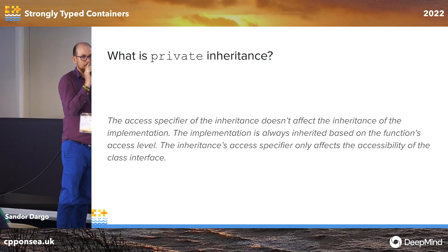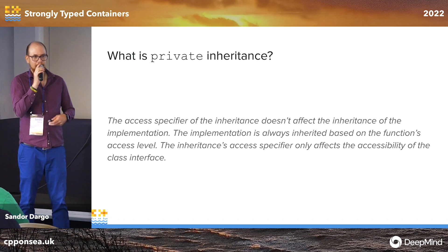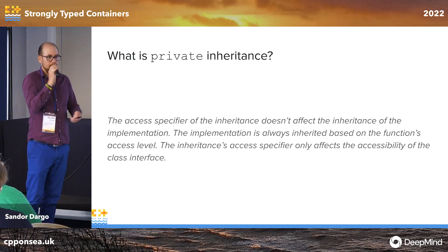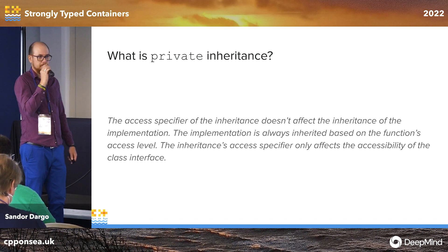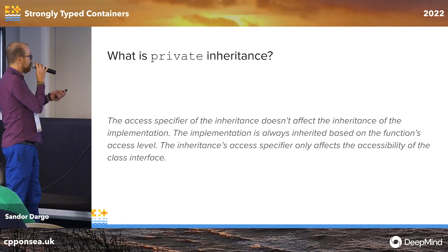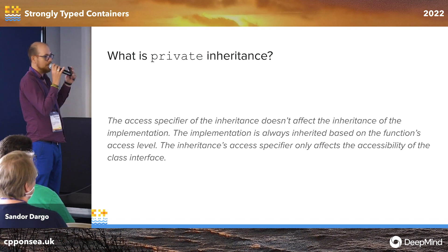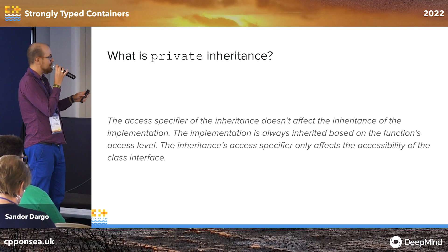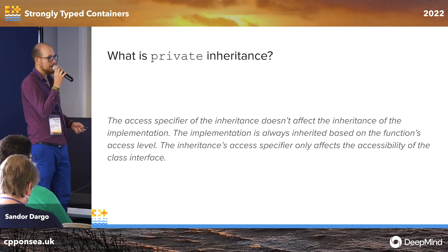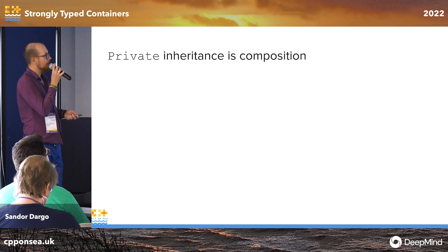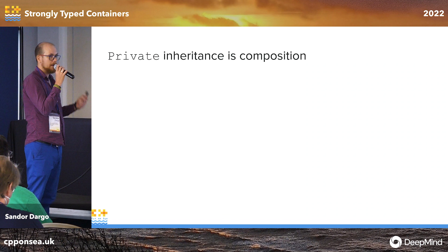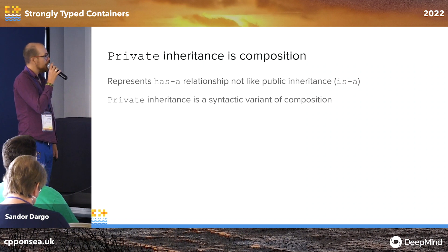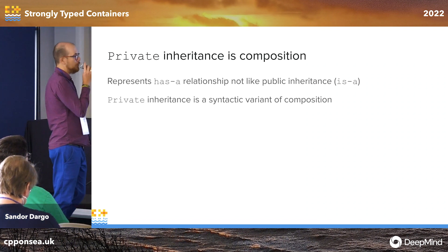Should we use private inheritance? Let's discuss what private inheritance is, because if you look into most code bases, it's not going to be used there. The access specifier of inheritance doesn't affect the inheritance of the implementation — it only affects the accessibility of the class interface. In other words, private inheritance is not really inheritance — it's more like composition. It represents a 'has a' relationship, not an 'is a' relationship.